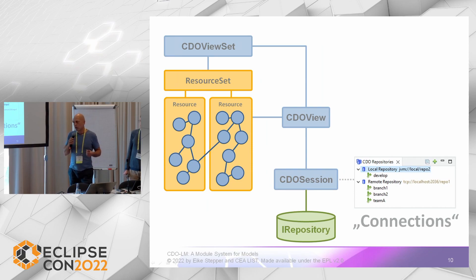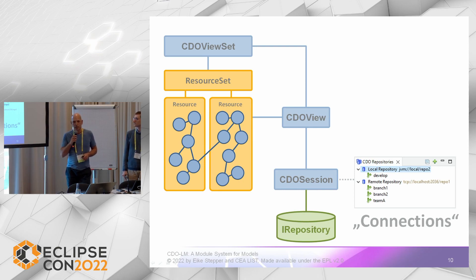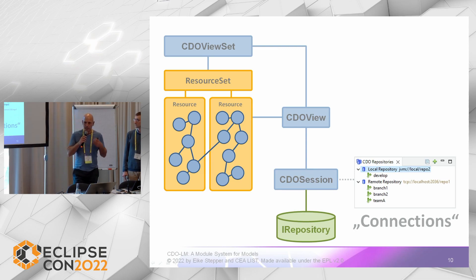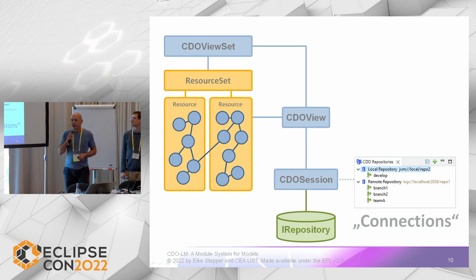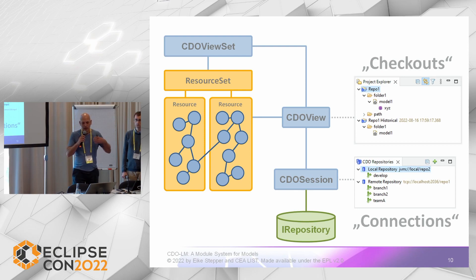This was the core API layer of CDO which you can use in your applications. We also provide some exemplary user interface that has become pretty sophisticated over the years. For example, to manage the connection information, there's an Eclipse view called the CDO repositories view, where you can configure your connections and it remembers them across Eclipse restarts. From there, you can check out the object graphs from your repositories through a Project Explorer integration, which displays the live objects as if they were in the local workspace.